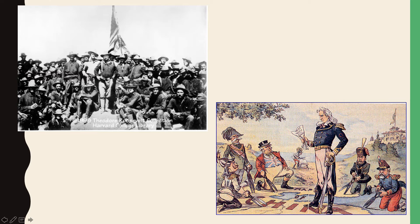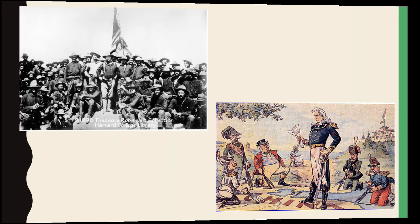Here is a cartoon depicting Uncle Sam standing over China as European countries try to carve up their spheres of influence, with his open note saying no — we've got to have free trade. In the background, that's Japan, which is a growing world empire at this time period. The United States tries to get along with Japan, but it's not going to go well, and as we all know, it eventually becomes the catalyst for America's entry into World War II.